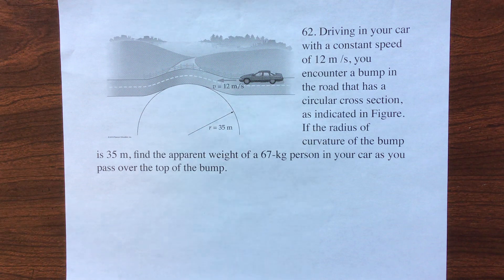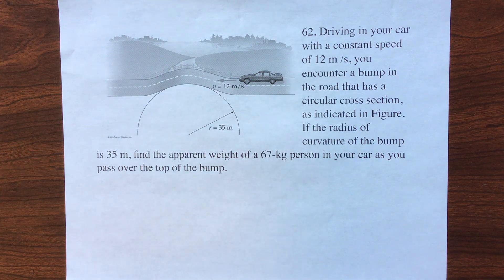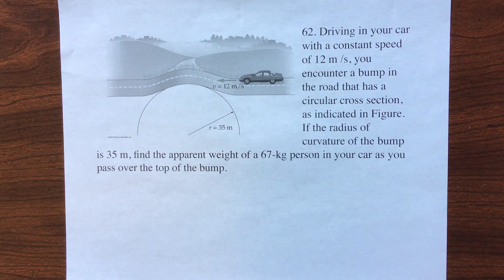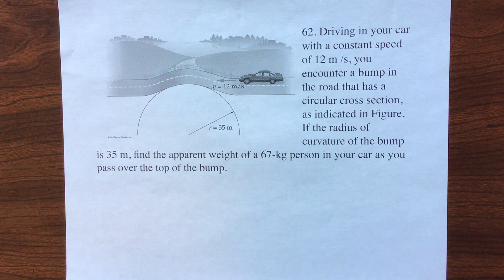Driving in your car with a constant speed of 12 meters per second, you encounter a bump in the road that has a circular cross section, as indicated in the figure. If the radius of curvature of the bump is 35 meters, find the apparent weight of a 67 kilogram person in your car as you pass over the top of the bump.